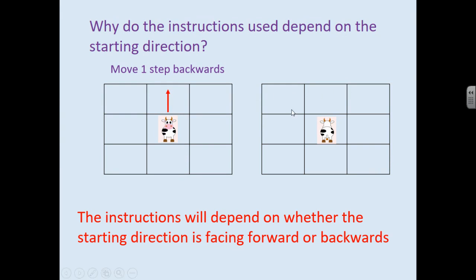Now this cow on the right is facing the other way and if we want it to move into this square, we're going to say move one step forwards.